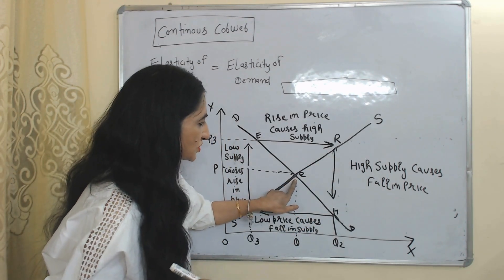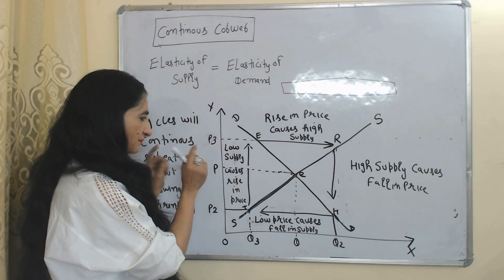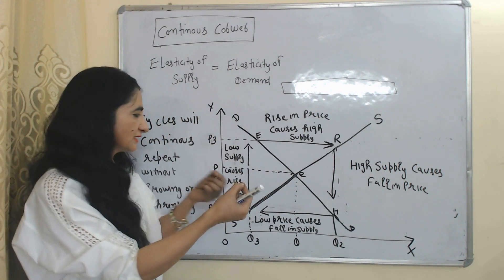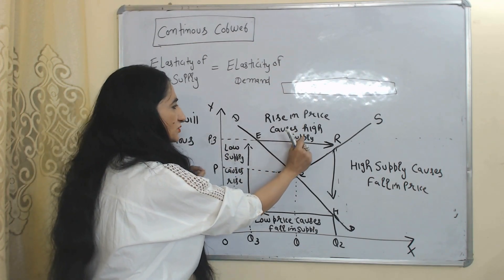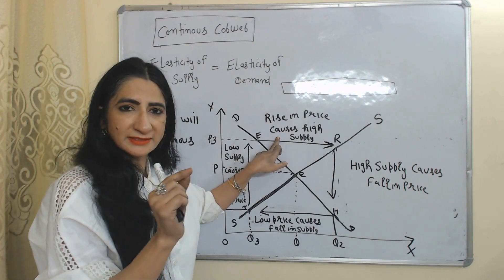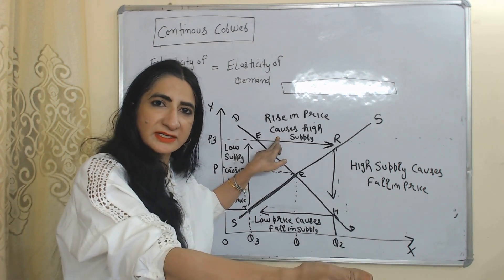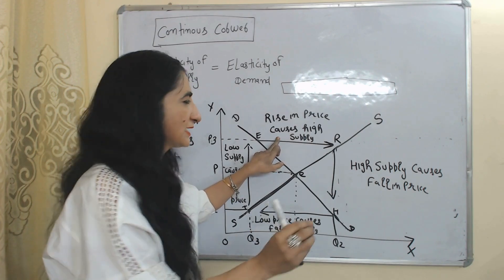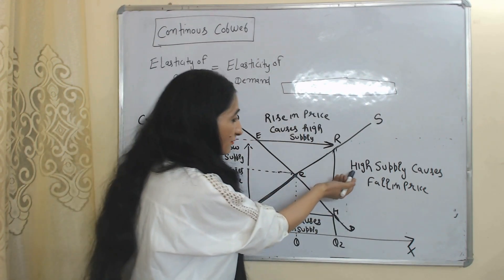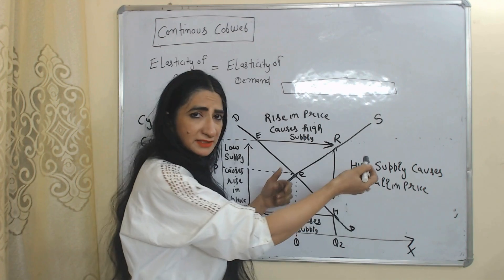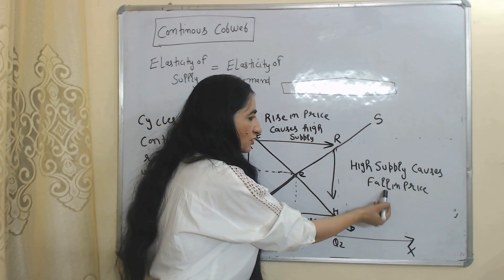E is our initial equilibrium point and our initial price is OP. Now suppose prices increase from P to P3. A rise in price causes higher supply — as we know, when prices increase the profit of the producer also increases, and eventually they will increase supply in the economy. So we can say that a rise in price causes higher supply.